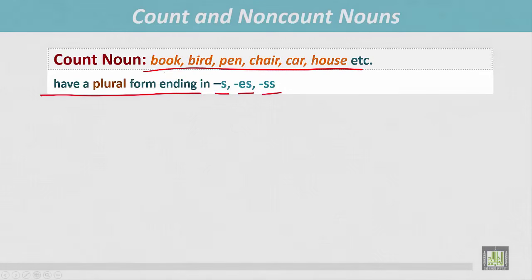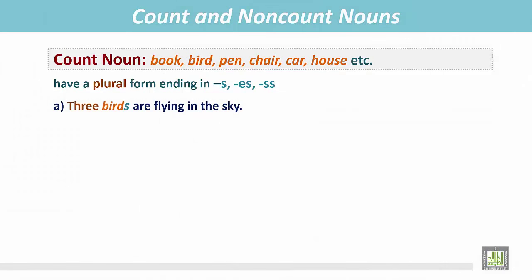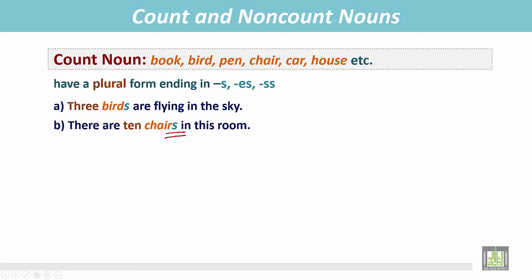Countable nouns have a plural form ending in -s or -es. For example, 'three birds are flying in the sky' — the countable noun 'bird' has the plural form ending in -s, making it 'birds.' Similarly, 'there are 10 chairs' — 'chair' is a countable noun with the plural form 'chairs.'